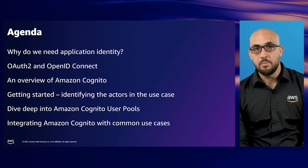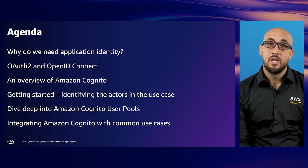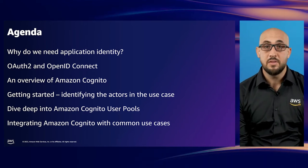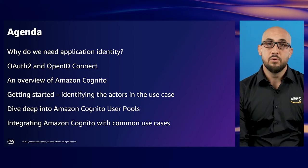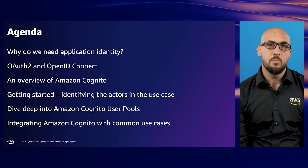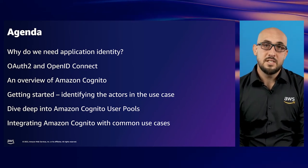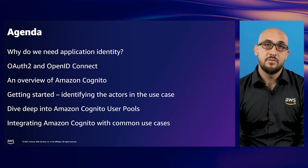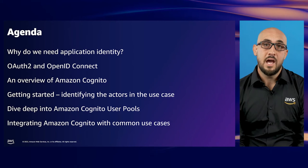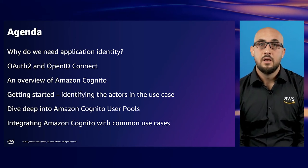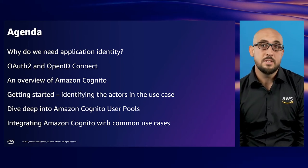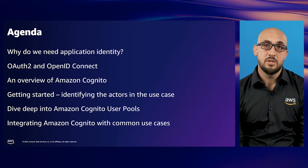Today I'm going to take you through a number of different topics which cover application identity. Firstly, we'll meet James and Amira, the software developer and the security architect who have a challenge with application identity. We'll then briefly cover identity standards, OAuth 2 and OpenID Connect, and review common authorization flows. To assist with the implementation of these standards, I'll provide an overview of Amazon Cognito, challenges customers are facing, and how it can solve complex identity challenges. We'll then jump into how we can identify the actors from these open standards within the high-level architecture defined by James and Amira.